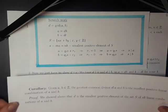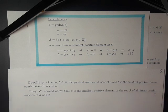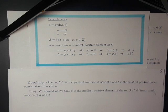One more interesting fact: as a corollary, given integers a and b, the greatest common divisor of a and b is actually the smallest positive linear combination of a and b. To see this, just note that we showed above that d is the smallest positive element of the set S of all linear combinations of a and b.